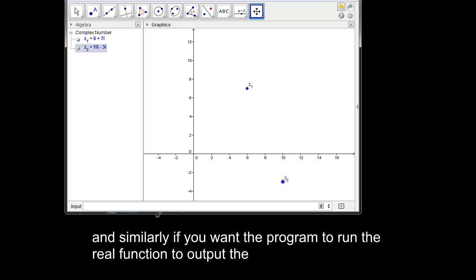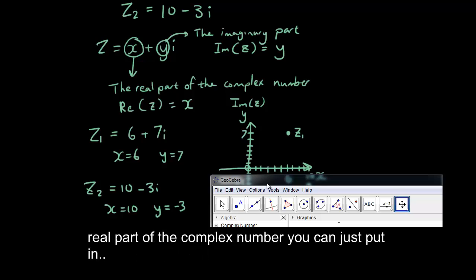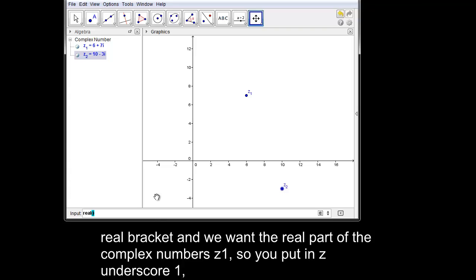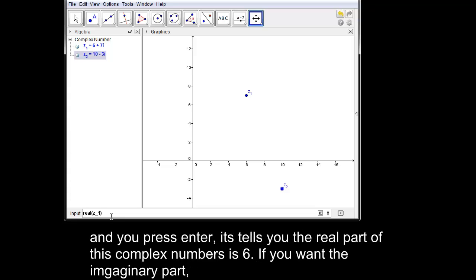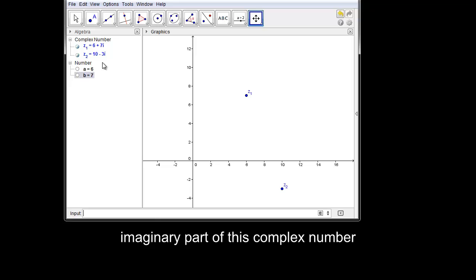And similarly, if you want the program to run the real function to output the real part of the complex number, you can just put in real bracket and we want the real part of the complex number z1. So you put z underscore 1 and you press enter and it tells you the real part of this complex number is 6. And if you want the imaginary part, you put imaginary bracket z underscore 1 and it'll give you 7 because that's the imaginary part of this complex number.